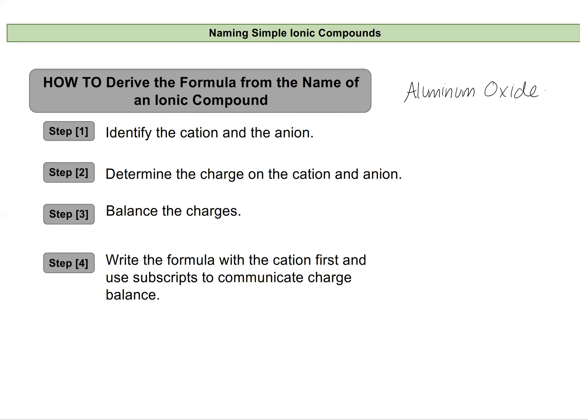So if I read a name like aluminum oxide, the first thing I'm going to do is identify my cation and identify my anion to determine what the chemical formula would be. The cation is always written first and the anion is always written second.